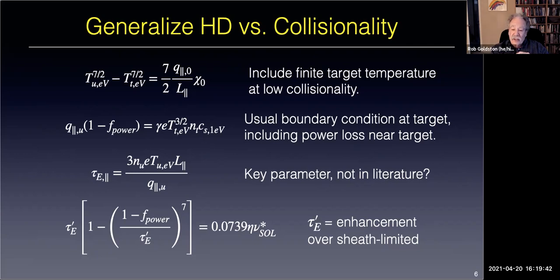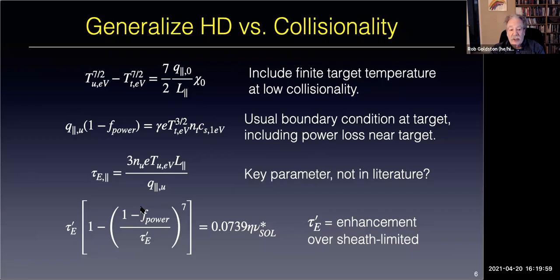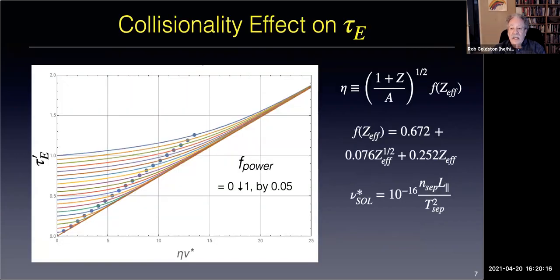You get an enhancement factor over the sheath-limited value. In the limit of low collisionality, F-power goes to zero—like the original model where tau-E-prime equals one, meaning no enhancement—and you get right back to the low-collisionality HD model. That's encouraging: the picture hangs together.